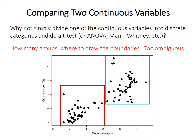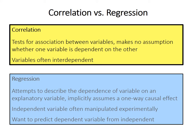The problem with that approach is that it's too ambiguous. How many groups should we make? Where should we draw the boundaries? Different choices might give you different results for the statistical test. It's just not very satisfying to remove data by binning things into categories. So because of those issues, there are specific tests designed for comparison between two continuous variables.